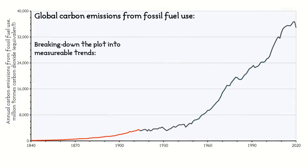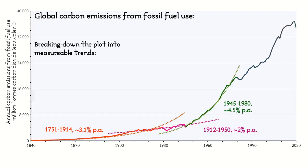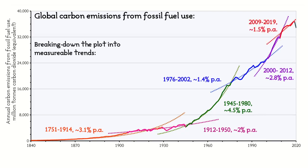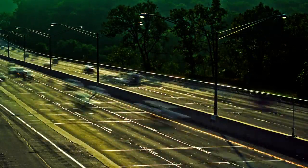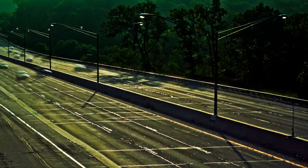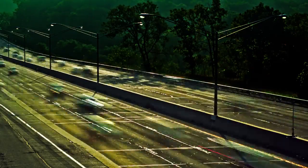What we have to do is break the whole curve into sections, and then separately match a curve into that small section of the data. From 1751 to 1914, growth is 3.1%. From 1912 to 1920, that falls to 2%. Then from 1945 to 1980, it jumps to 4.5%. Then from 1976 to 2002, it slumps to 1.4%. Then from 2000 to 2012, it jumps to 2.8%. And finally, in the last decade, it falls to 1.5% again. Compared to the previous graph, it's possible to see how much better each small curve fits through the carbon emissions data. What this shows is that the rate of change in carbon emissions changes according to a definable, time-limited phase. These phases don't have neat boundaries because that change isn't sudden from one year to the next.